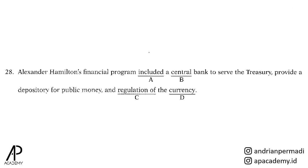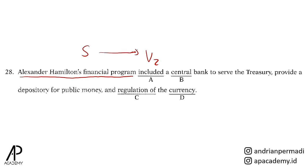Untuk nomor 28, kita lihat pilihan A: included. Included adalah verb, lebih tepatnya past simple verb atau kata kerja bentuk kedua. Subjek dari kalimat ini adalah Alexander Hamilton's Financial Program. Untuk melihat singular atau plural suatu subjek, kita perlu melihat head noun. Dalam hal ini, program adalah head noun dan bersifat singular. Verb 2 bisa dipakai dengan singular atau plural noun. Oleh karena itu, A masih tepat.